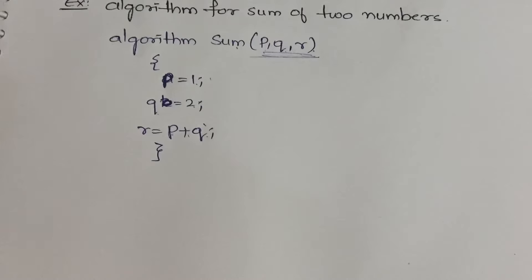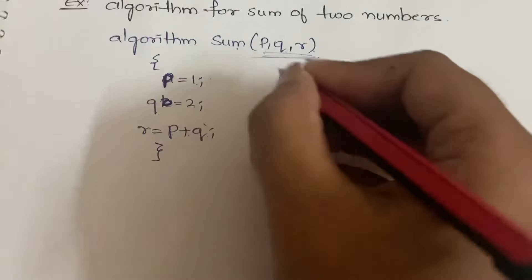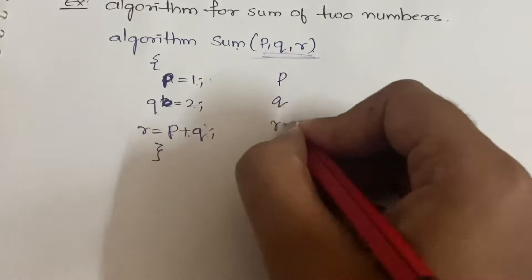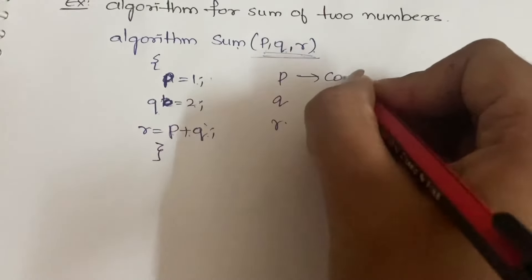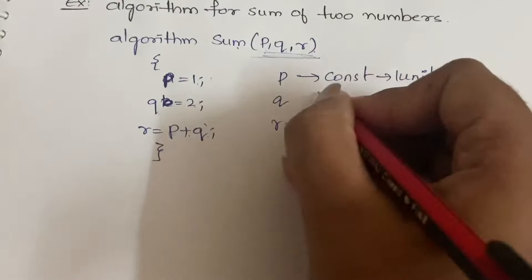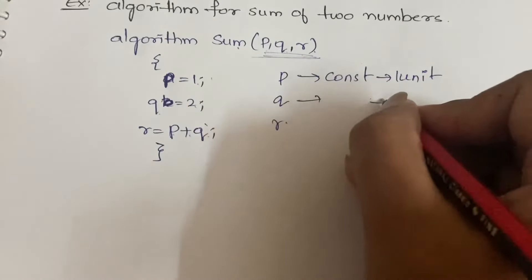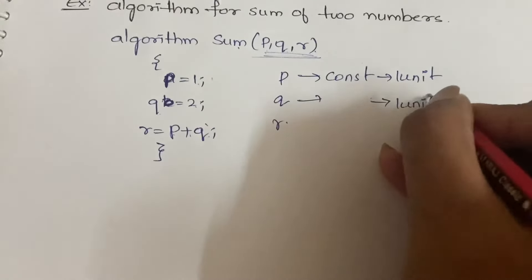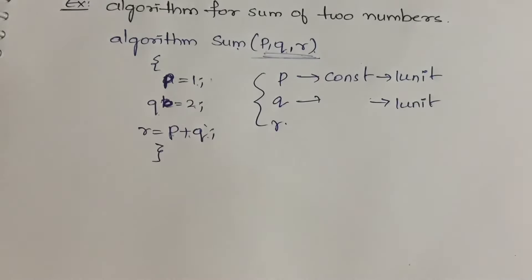Let us calculate the space. For constants, you can always take the space as one unit. Here we have three variables: p, q, and r. p is a constant, so you take its space as one unit. q is also constant, so one unit as well. p, q, r are integers — if they are integers they occupy two bytes; if they are floating point they may occupy more. It depends on the programming language.